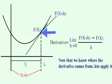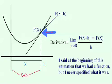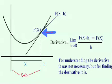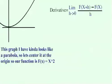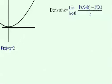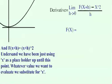I said at the beginning that we had a function but never specified what it was. For deriving the equation for the derivative it wasn't necessary, but for applying it, it is. The graph looks like a parabola, so let's center it at the origin and say our function is f of x equals x squared.